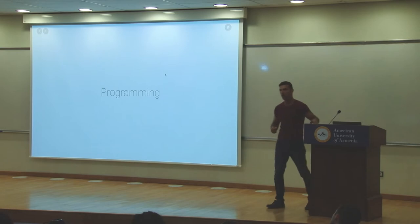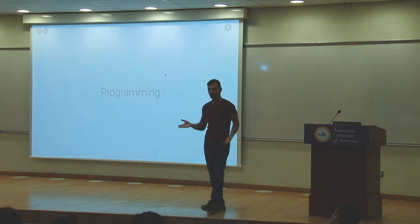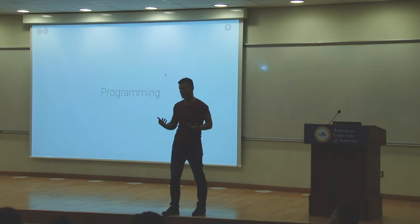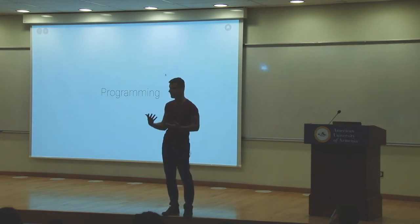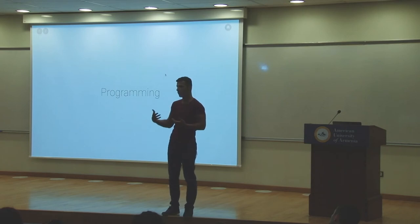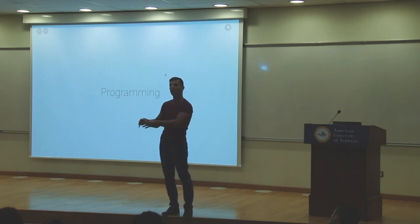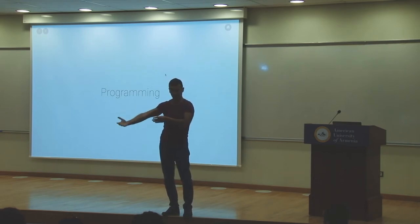There are various classes of languages. A language is just a way for you to communicate with someone or something — it's just a means of communication. A programming language is a way for you to communicate with the computer, specifically with the processor, which is the part that's going to execute your instructions — the steps you're going to tell it to execute.